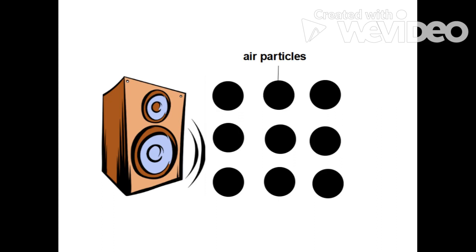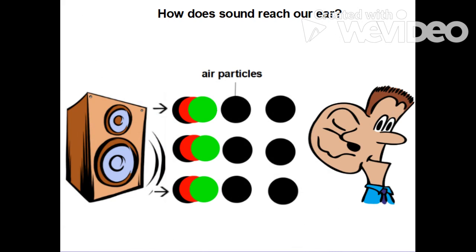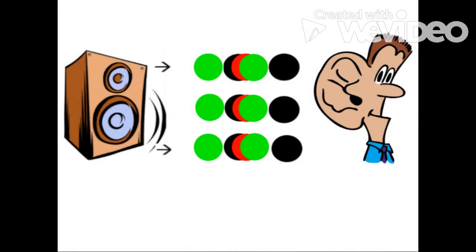When the speaker starts to vibrate, the air particles closest to the speaker are pushed forward. These air particles hit air particles right next to them and push them forward. These air particles will then hit the air particles that are closest to them and cause them to vibrate too.